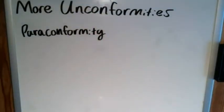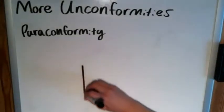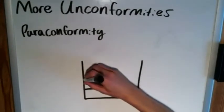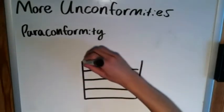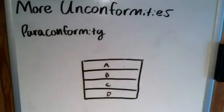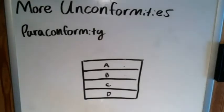Paraconformities are interesting because there's not a clear way of seeing them. In fact, it's very easy to overlook them if you're just looking at a column of strata in the Grand Canyon. Essentially, what they look like is just layers — layer a, b, c, and d — and you look at this and think it's just four layers of strata deposited on top of one another.